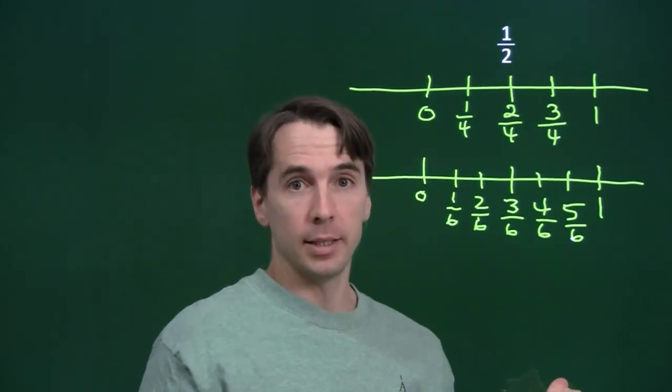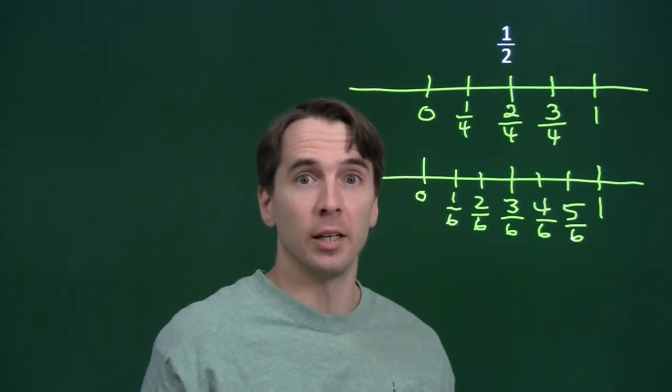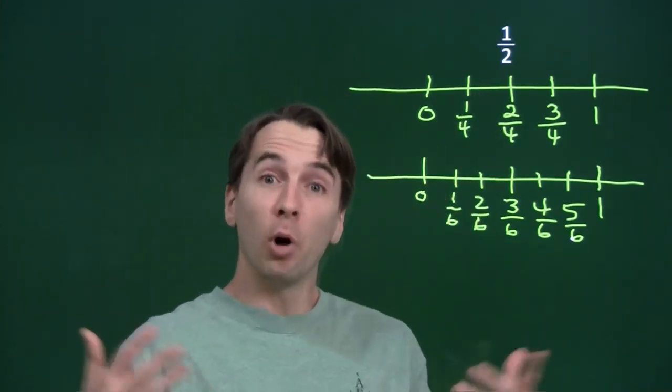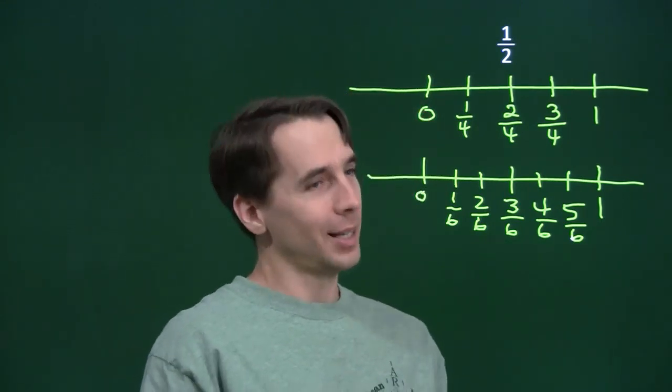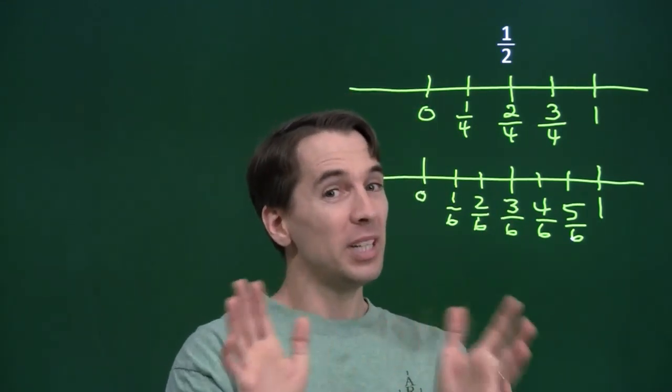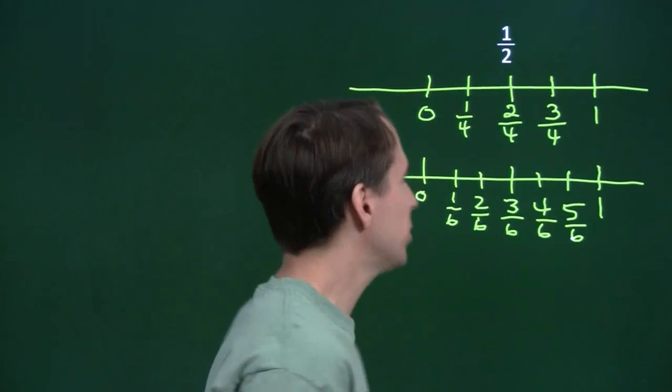Now, we didn't need the number line to see this. We could have done this with arithmetic. And we do that by taking 1 half and multiplying it by 1. That's right. So we just multiply it by 1. But not just any one. A very special one.